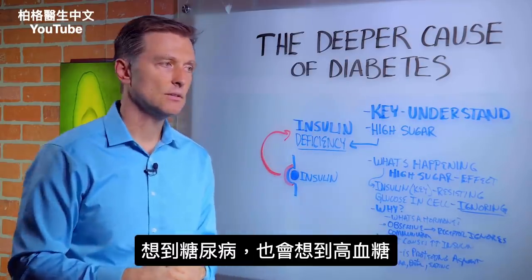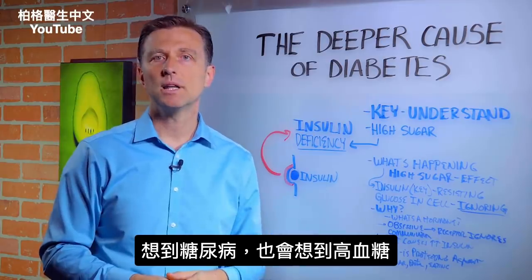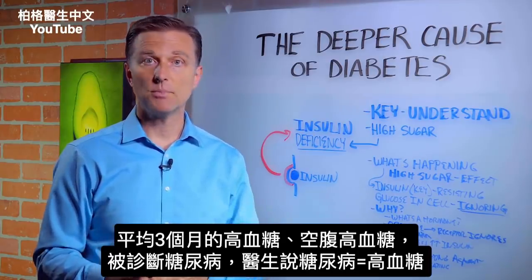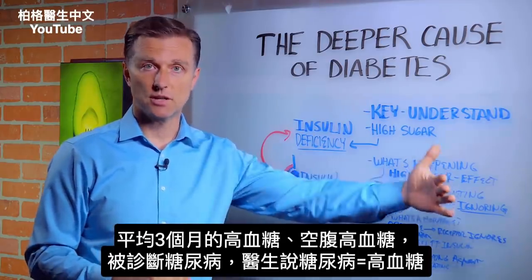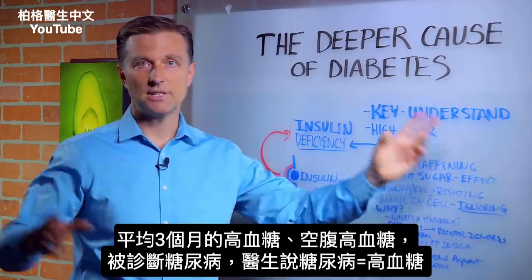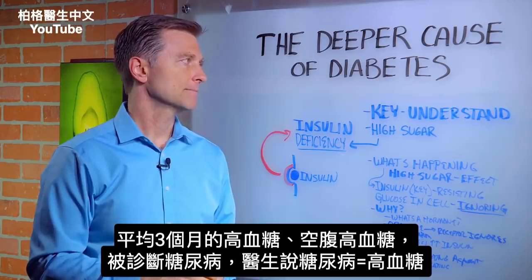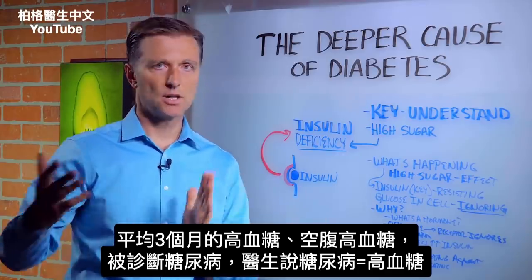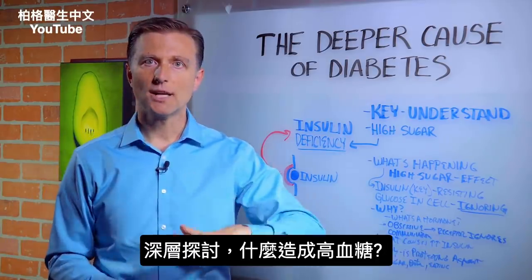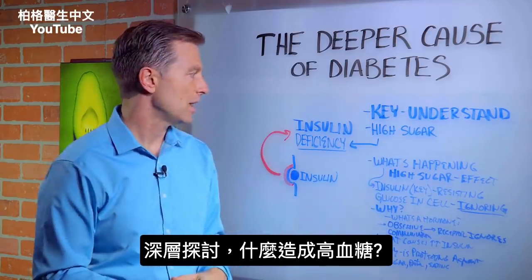Typically, when you think about diabetes, you always think about high blood sugar, right? A1c — it's an average of three months of high blood sugar. You do a fasting blood sugar. That's how you diagnose diabetes. Go to the doctor. Diabetes is high sugar. But let's go deeper. What causes the high sugar? That's the question.